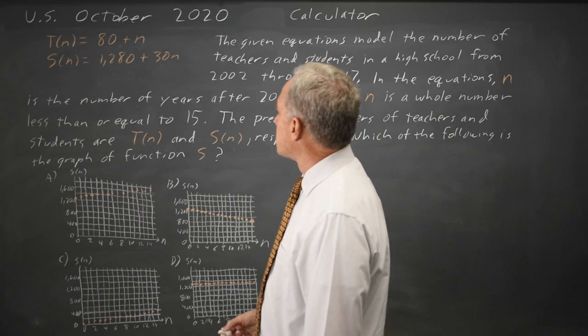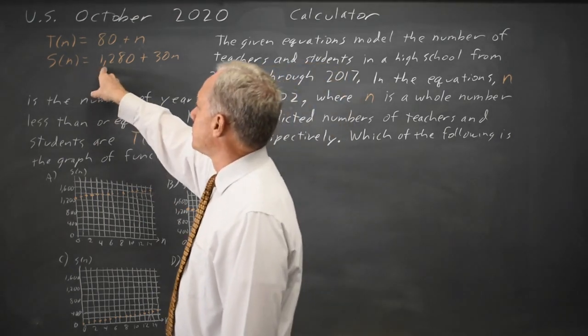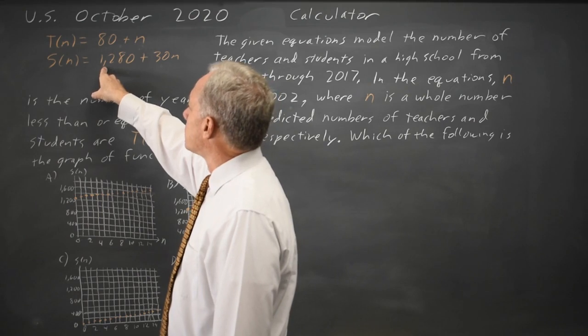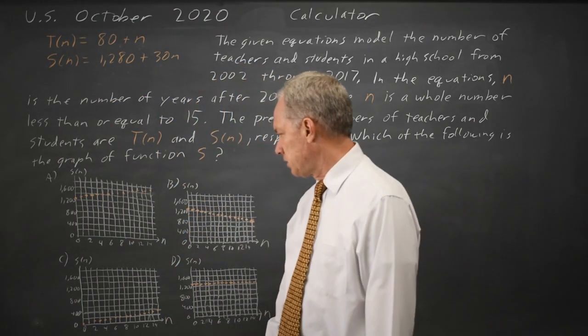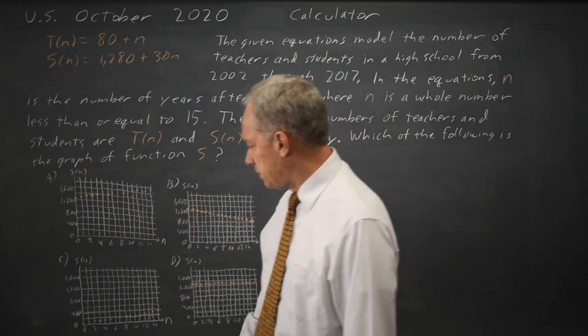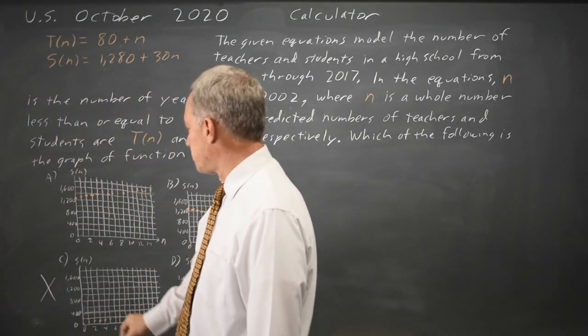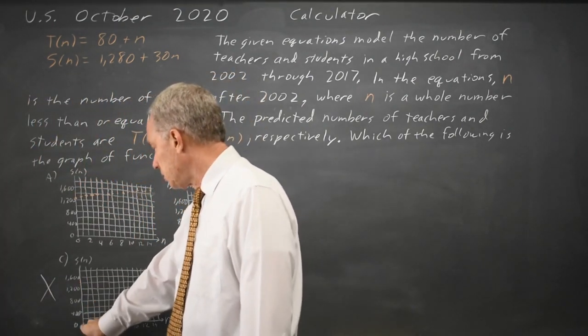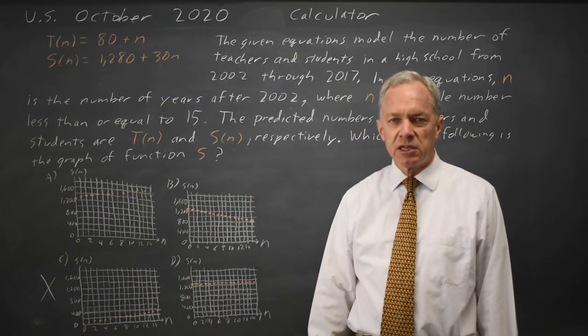If you look at n equals 0, the number of students should be 1280 plus 30 times 0, which is 1280. Choices A, B, and D are close to that. C is a very small number compared to 1280, which would be up here or down here. So choice C is clearly not correct.